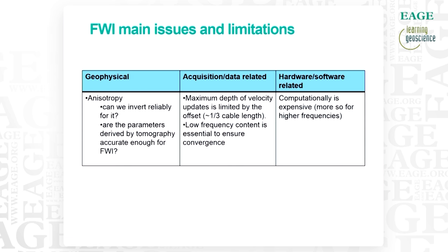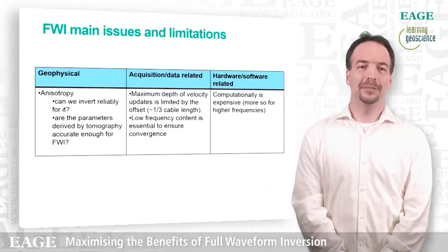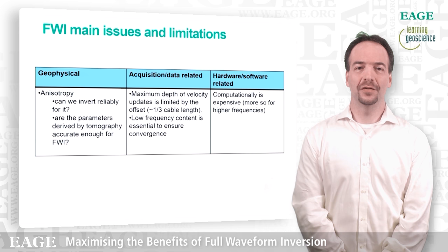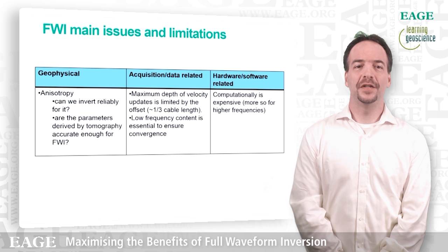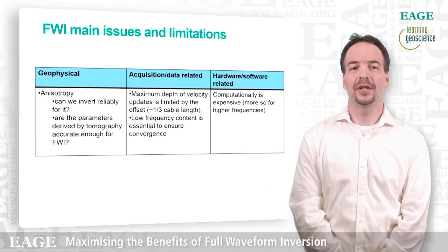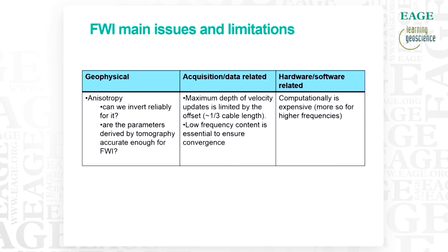So now — everything is perfect? We know that we still have issues and limitations, which I divide into three parts: geophysical issues, data-related, and hardware-related. From a geophysical point of view, we still struggle with multi-parameter inversion — in particular with anisotropy. There is a large trade-off between anisotropic parameters and velocities, and that is not just a problem with FWI — it's a problem for travel time tomography as well. The question is: can we invert reliably for it? If not, can we use the parameters derived from tomography to help us in FWI?